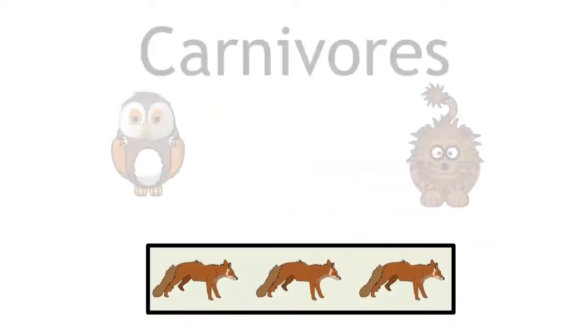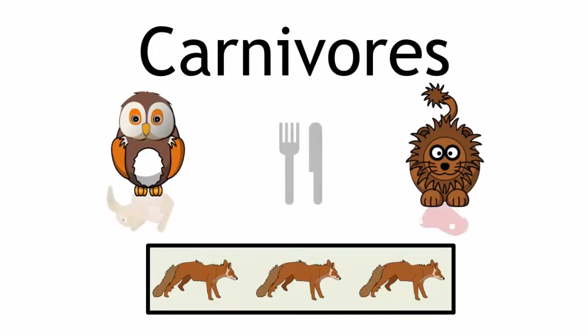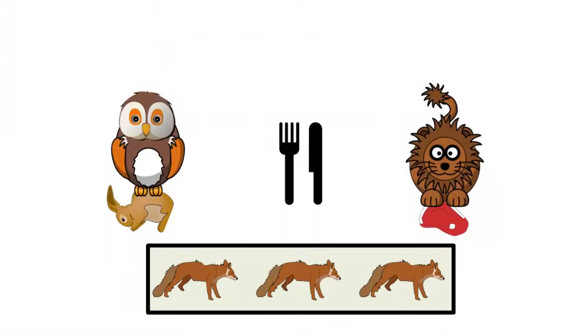Level 3 is carnivores who eat herbivores. They are eating organisms from level 2, so they are the secondary consumers.